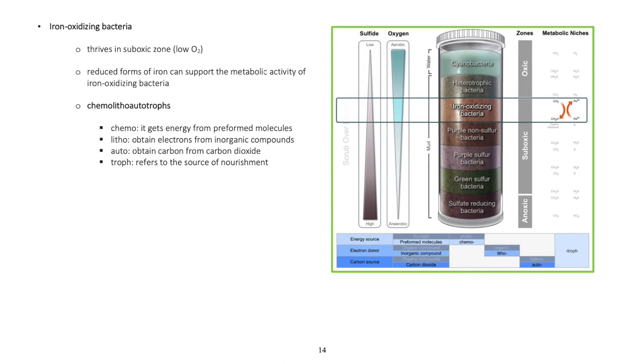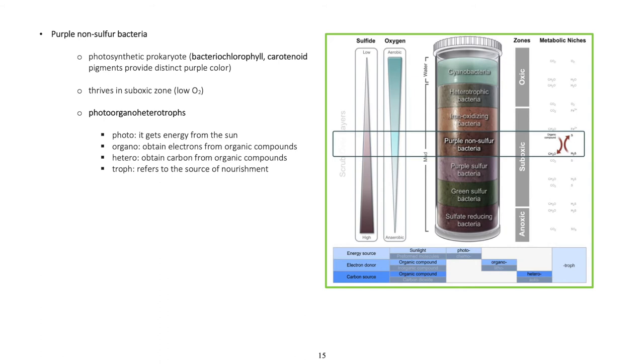Iron oxidizing bacteria thrive in suboxic zone with low oxygen. Reduced forms of iron can support the metabolic activity of iron oxidizing bacteria. Chemolithoautotrophs - chemo: gets energy from preformed molecules, litho: obtain electrons from inorganic compounds, auto: obtain carbon from carbon dioxide, troph: refers to the source of nourishment.